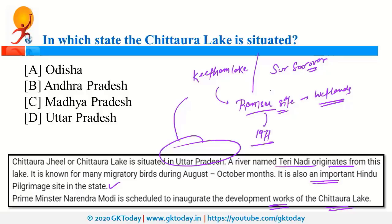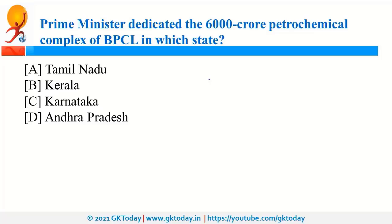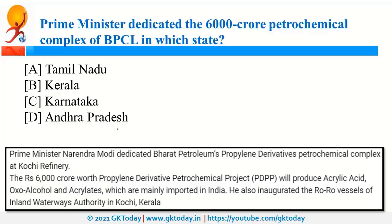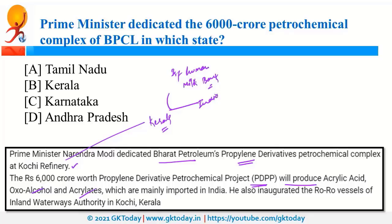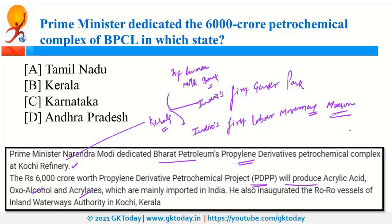Prime Minister dedicated the 6,000 crore rupee petrochemical complex of BPCL — Bharat Petroleum Corporation Limited — at its Kochi facility in Kerala. This PDPP plant will produce propylene derivatives including acrylic acid, oxoalcohol, and acrylates, which are usually imported into India. Kerala was also in news for opening its first human milk bank, India's first gender park, and India's first labour movement museum.